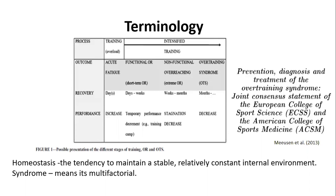I'm going to draw your attention to this paper from Meeusen et al. 2014 — the prevention, diagnosis, and treatment of overtraining syndrome. What the authors tried to do was define what overtraining was and categorize it into subtypes.